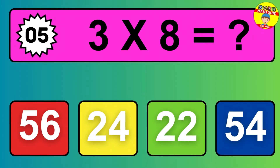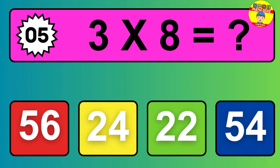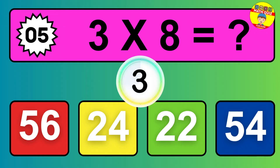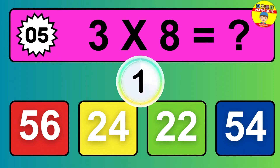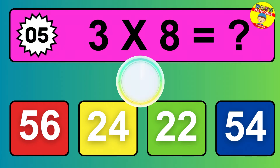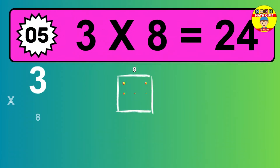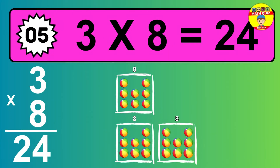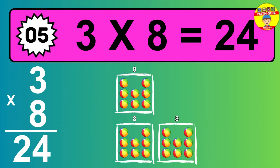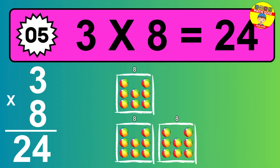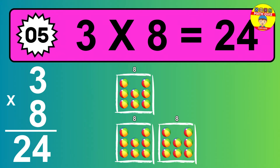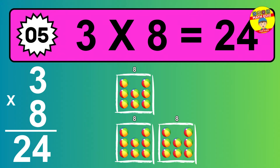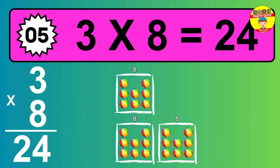Question 5. 3 times 8 equals what? The answer is 3 times 8 is 24. To calculate, we have 3 groups with 8 balls each one. So how many balls do we have? 24 balls.